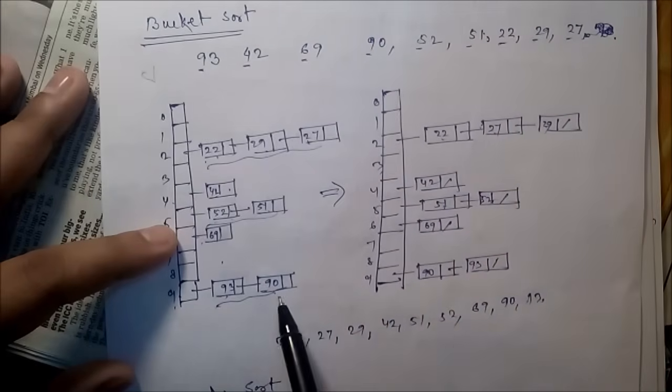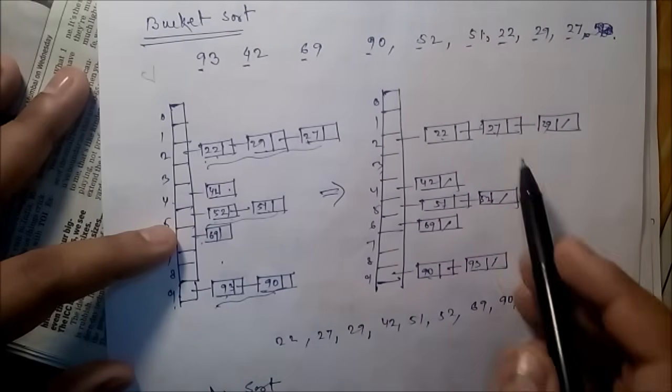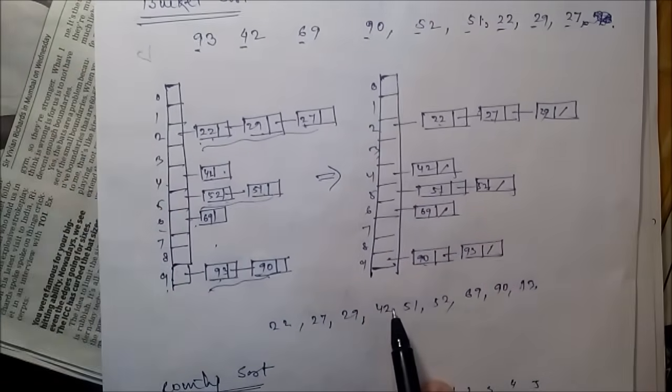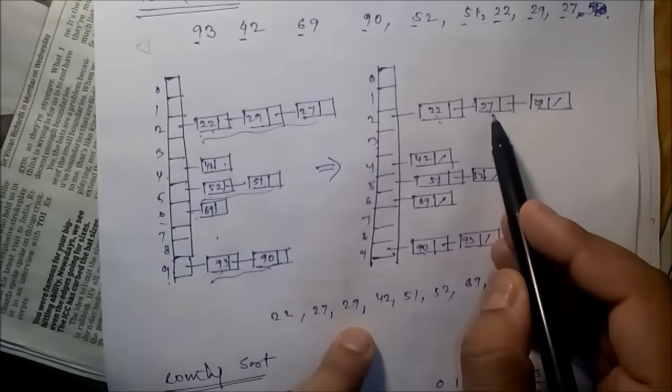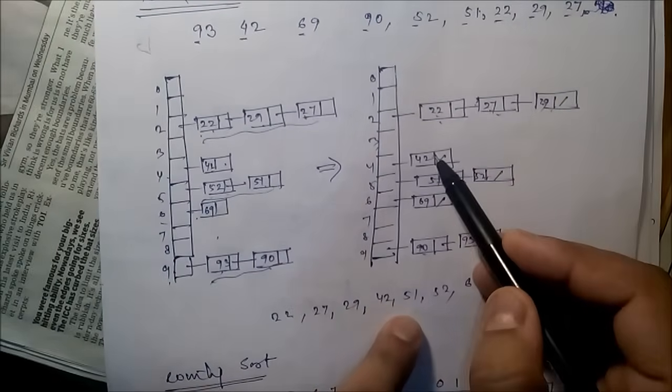Now copy all the information. So first one is 22, then 27, then 29, 42, 51.